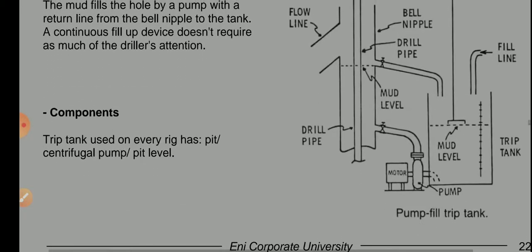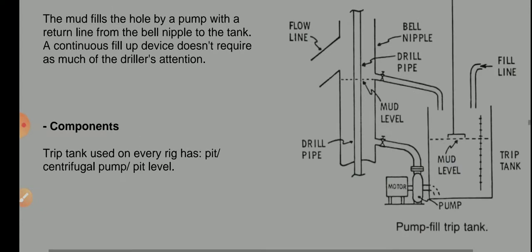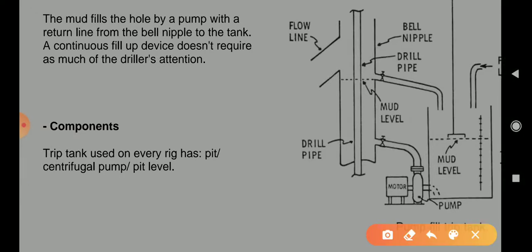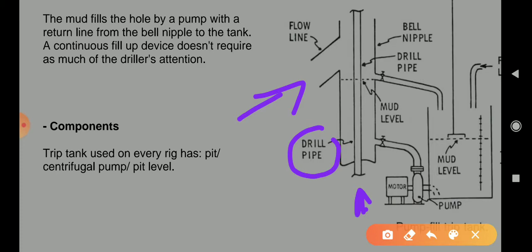The components used on every rig include a centrifugal pump and a pit level indicator. You can see here: the pump fills the trip tank. There is the drill pipe, the flow line, and a small fill line. The centrifugal pump takes the mud and pumps it into the annulus, which goes down around the drill string.